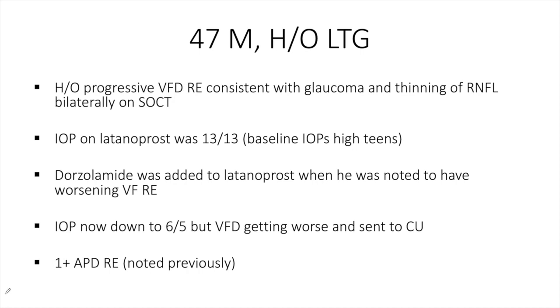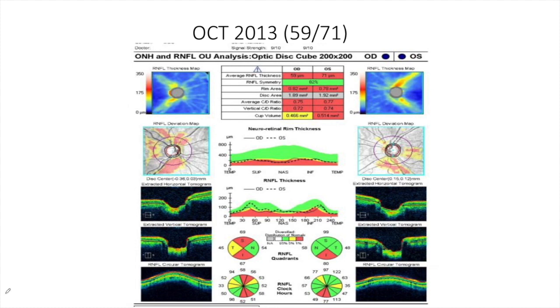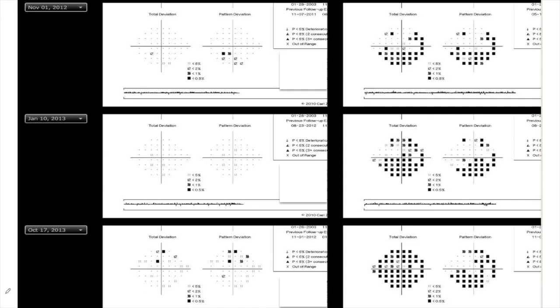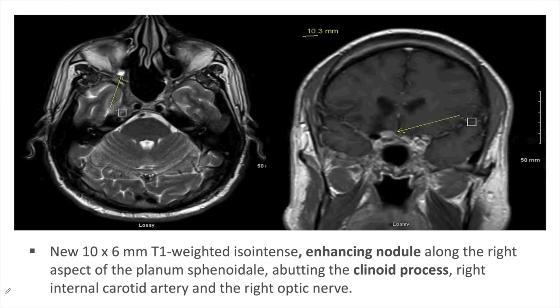He was noted to have a 1+ APD on the right side, noted prior to his first visit with us. OCT shows average RNFL of 59 on the right and 71 on the left. Visual field defects are worsening on the right side between 2012 and 2013, with a worsening of the superior and inferior depressions. On the left side, scattered nonspecific defects fluctuate between 2012 and 2013. Because of the worsening visual field defect on the right, an MRI was obtained and showed an enhancing nodule abutting the clinoid process, right internal carotid artery, and right optic nerve.